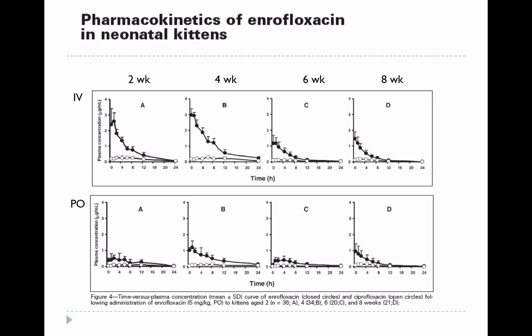Looking at an example of oral bioavailability problems in young animals: this study examined the pharmacokinetics of enrofloxacin in kittens from two to eight weeks of age. Plasma concentrations after IV administration are shown on top, and after oral administration on the bottom. Especially in the younger groups, oral administration does not result in very high plasma concentrations — likely because enrofloxacin is being chelated by the calcium in the milk diet of these neonates.